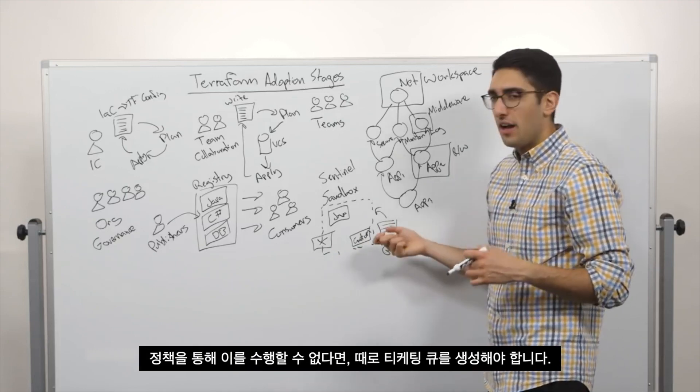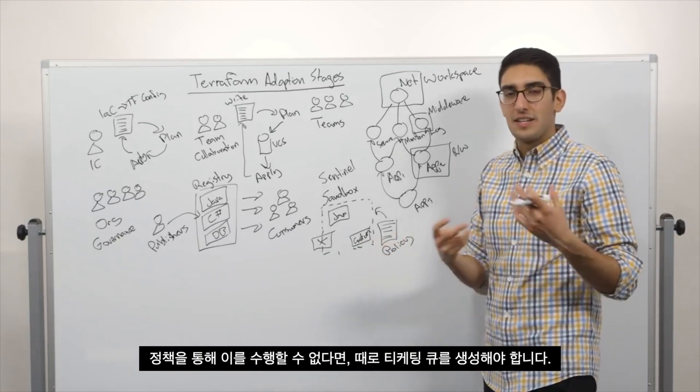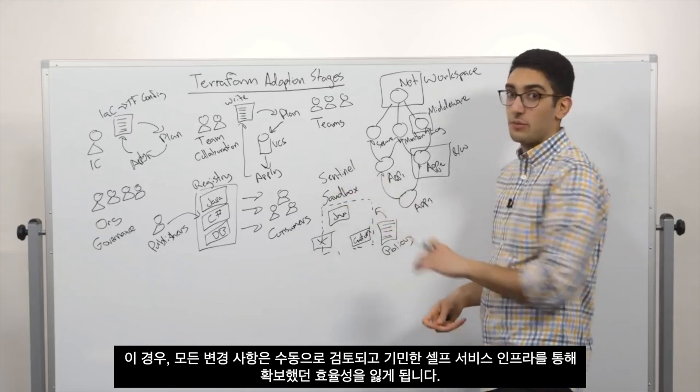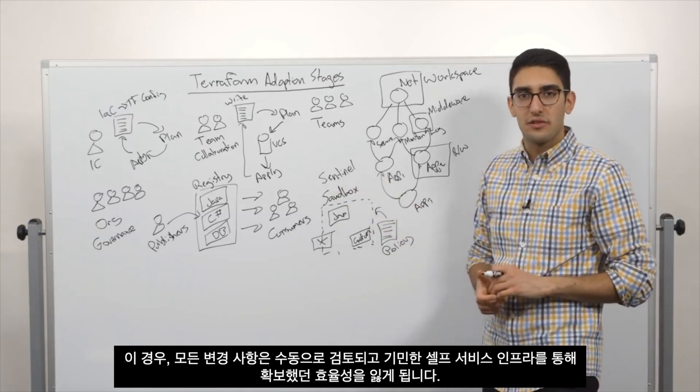Because if we don't do it through policy, oftentimes what ends up happening is we create a ticketing queue where all changes are reviewed manually and we lose the efficiency that we've gained in the agile self-service infrastructure.